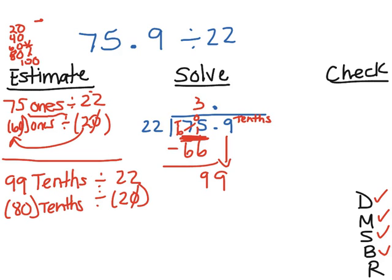80 tenths. Whatever you do to one side, you do to the other. Monkey see, monkey do. How many times does 2 go into 8? 4.